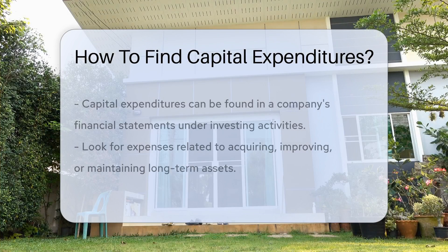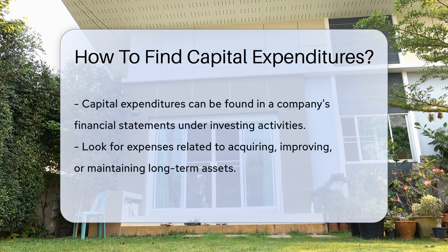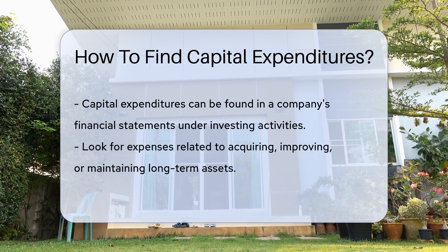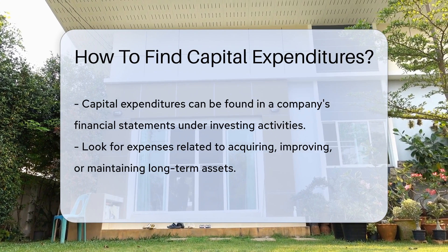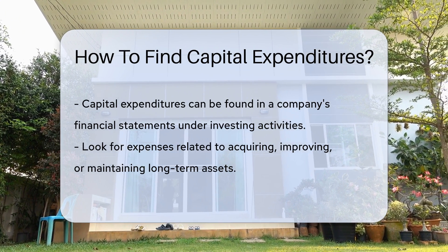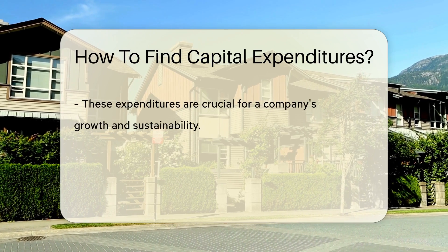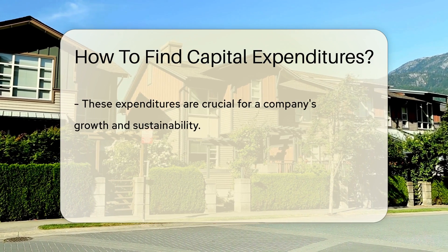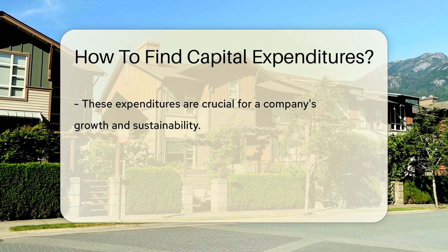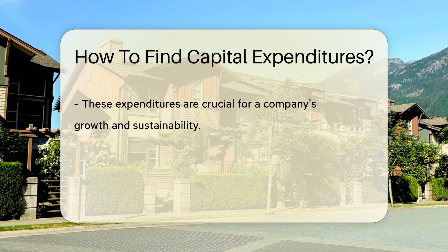Capital expenditures can be found in a company's financial statements under the section for investing activities. Look for expenses related to acquiring, improving, or maintaining long-term assets like property, equipment, or technology. These expenditures are crucial for a company's growth and sustainability.